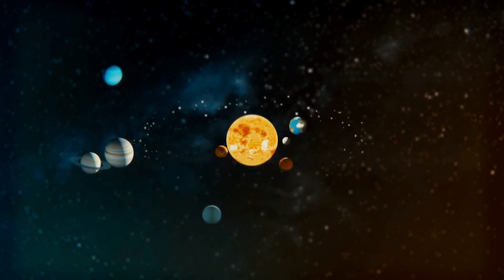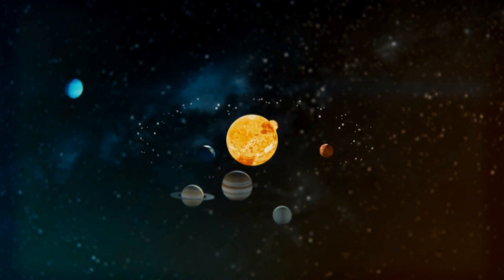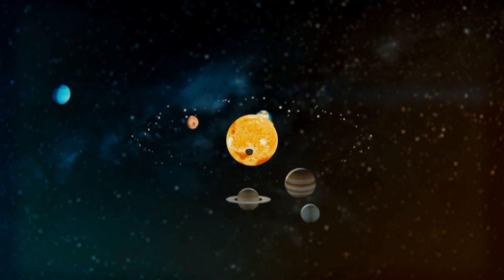If Proxima b is within its star's habitable zone, it might have the right conditions to support liquid water. However, this does not make it a second Earth.